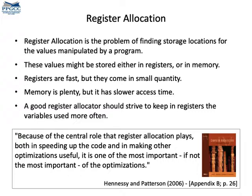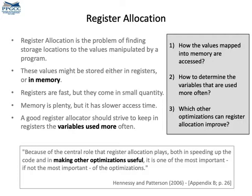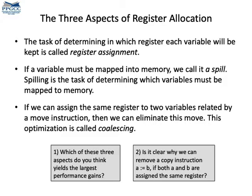Register allocation involves many problems, in particular the problem of finding which variables will be placed in memory. Additionally, depending on how we allocate variables to registers, we can eliminate copies and increase the amount of instruction level parallelism in the program. The problem of determining which variables will be allocated in registers is called the register assignment problem. Variables that are mapped to memory are called spills, and if we can assign the same two variables involved in a copy instruction to a common register, then we can eliminate that copy. This copy elimination procedure is called register coalescing.